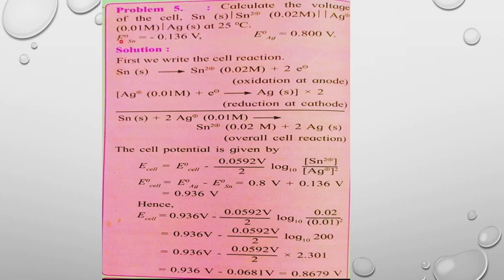Given standard electrode potentials: E° for tin = −0.136 V, and E° for silver = +0.800 V.